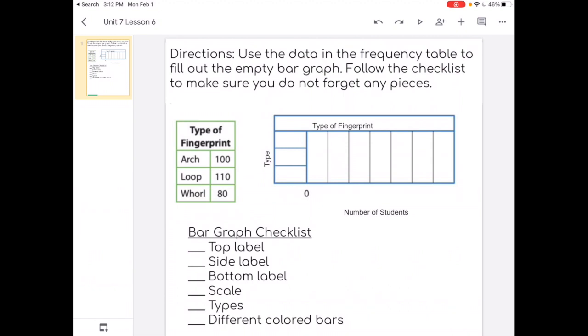Now it says to do the scale. The scale starts at zero. And for me to decide which numbers will go in the scale, I need to look at the numbers in the frequency table. Because if they are only going to 10, then my scale is probably going to be by twos. But these numbers go all the way to 110. So I'm going to make my scale by 20s.